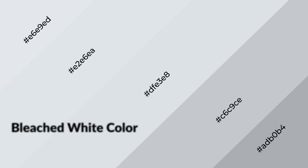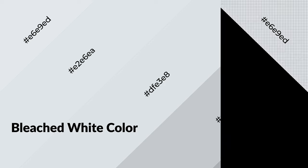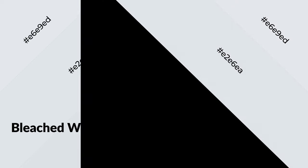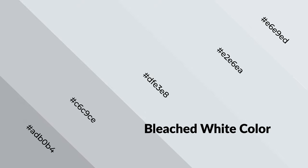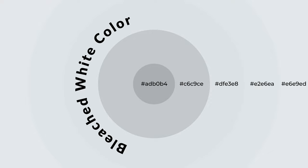Bleached white is a cool color and it emits calming, serene, soothing, refreshing, spacious, unwinding, peaceful, and relaxed emotions. Cool colors are like water, ice, sky, grass, soft, and snow. You can see them used in baby products.